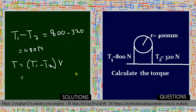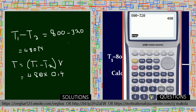Using this formula F times R, the radius. So 480, and then you have to convert this, divide by a thousand, which is 0.4. So multiplying by 0.4.